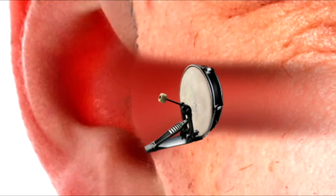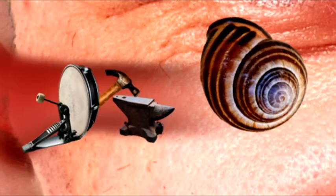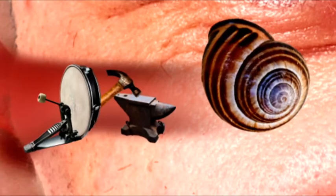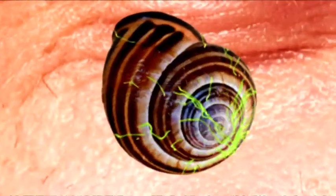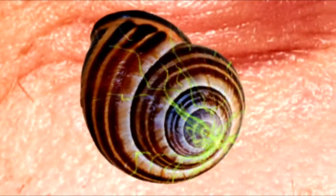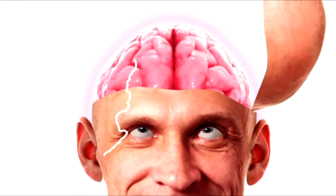The famous ossicle trio, hammer, anvil and stirrup, amplify these oscillations and pass them onto the cochlea where tens of thousands of tiny hair cells start to vibrate. This transforms the oscillations into electrochemical impulses that travel straight to the brain.